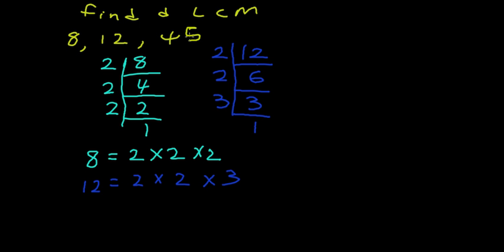The prime factorization for 45. Draw a line, draw another line. We can start with 2, but 2 dividing 45, there is going to be a remainder, so let's go to 3. 3 can divide without the remainder. 3 in 45 is 15. 3 can still go. 3 in 15, you have 5.